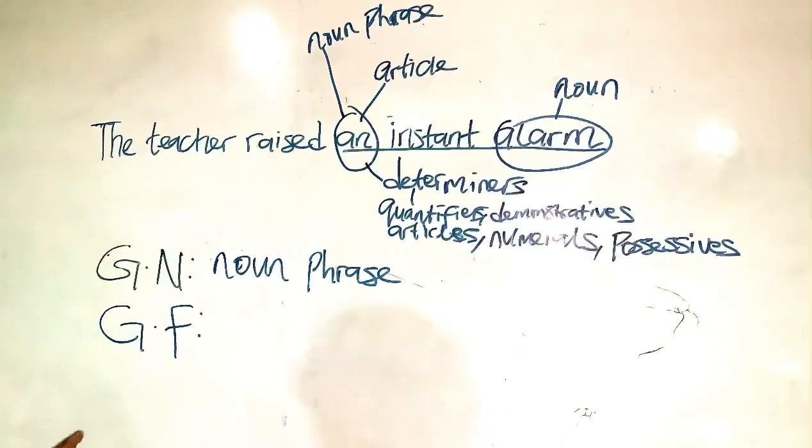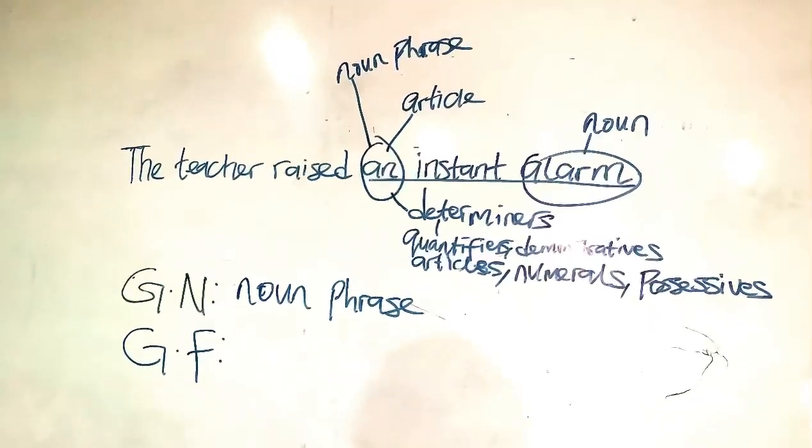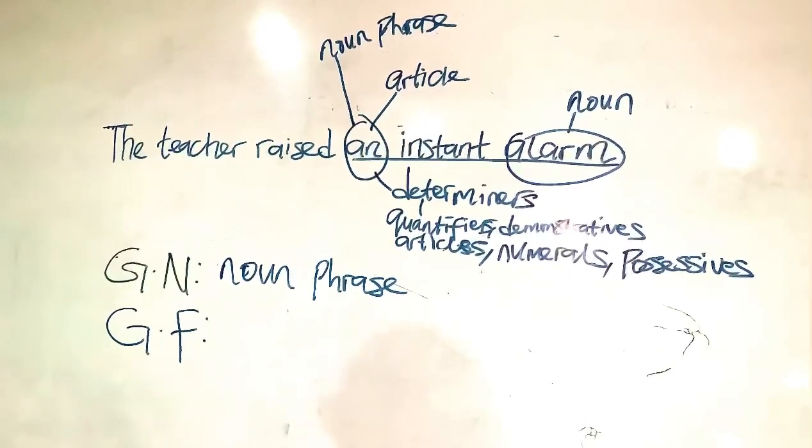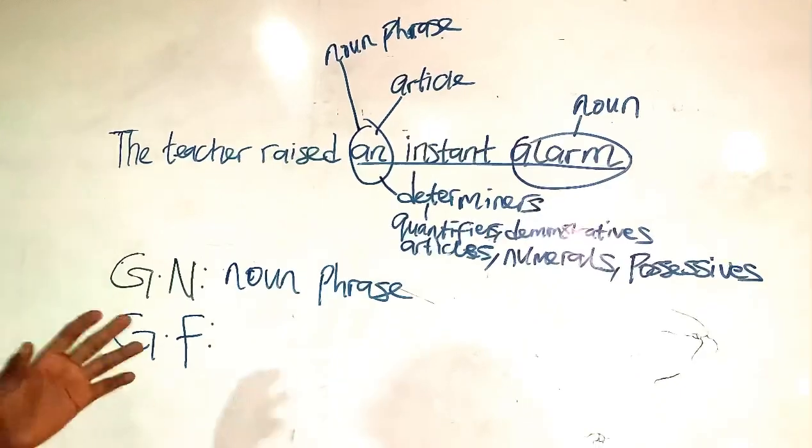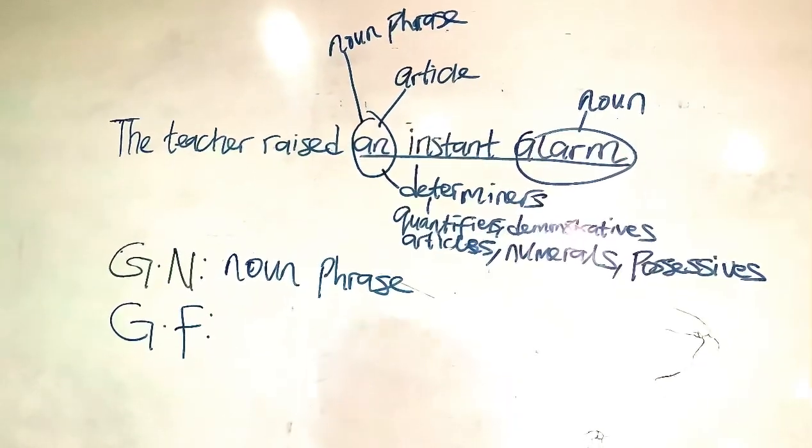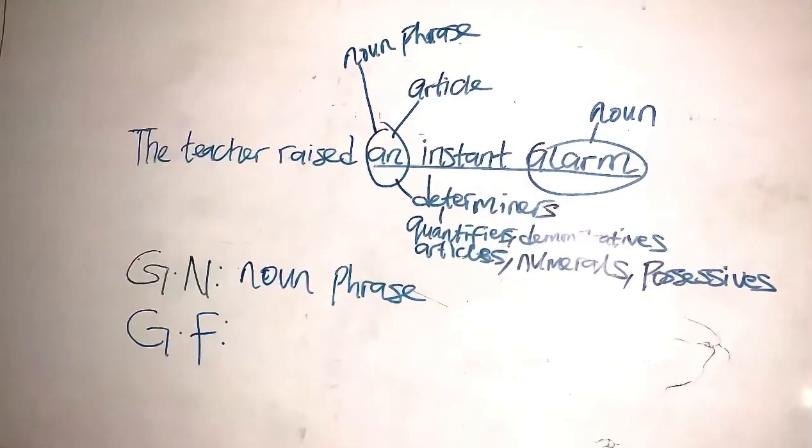For noun phrases, we don't talk about it qualifies or it modifies. What we talk about when it comes to noun phrases are subject of the verb, object of the verb, complement, subject complement, object complement, apposition to the noun, and so on and so forth.